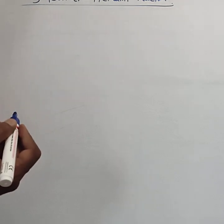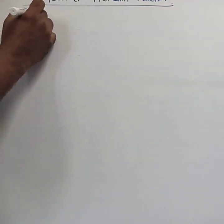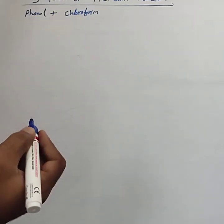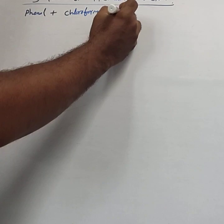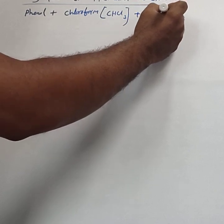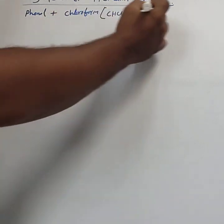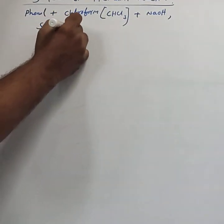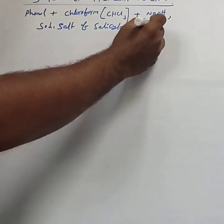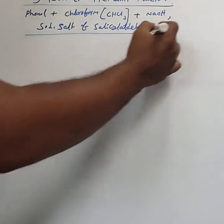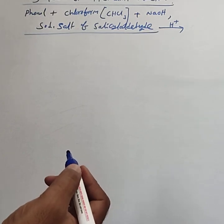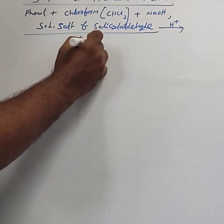The Reimer-Tiemann reaction: when phenol is treated with chloroform (CHCl3) in the presence of sodium hydroxide (NaOH), the sodium salt of salicylaldehyde is formed as an intermediate. This sodium salt of salicylaldehyde on acidification gives salicylaldehyde.